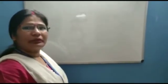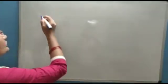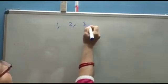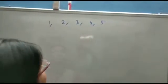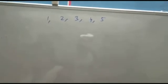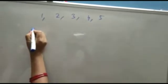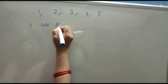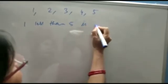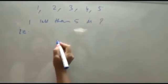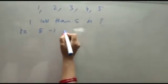Now see examples for less than numbers. Suppose you are given the numbers 1, 2, 3, 4, 5. 1 less than 5 is what? That is, 5 minus 1 equals 4.